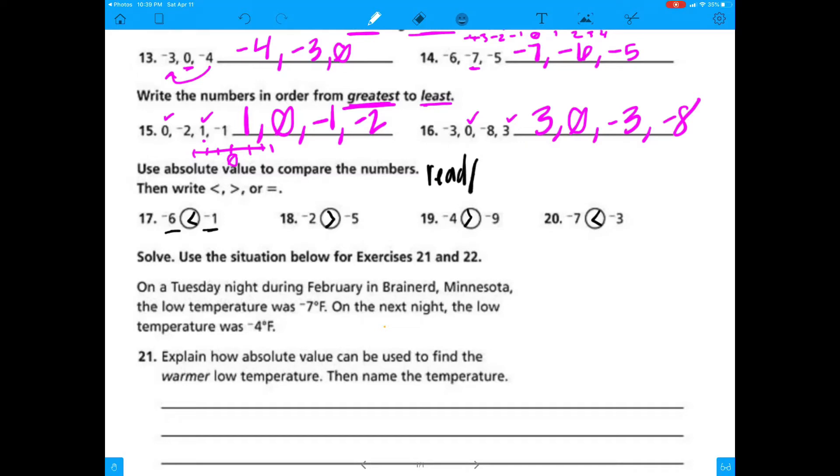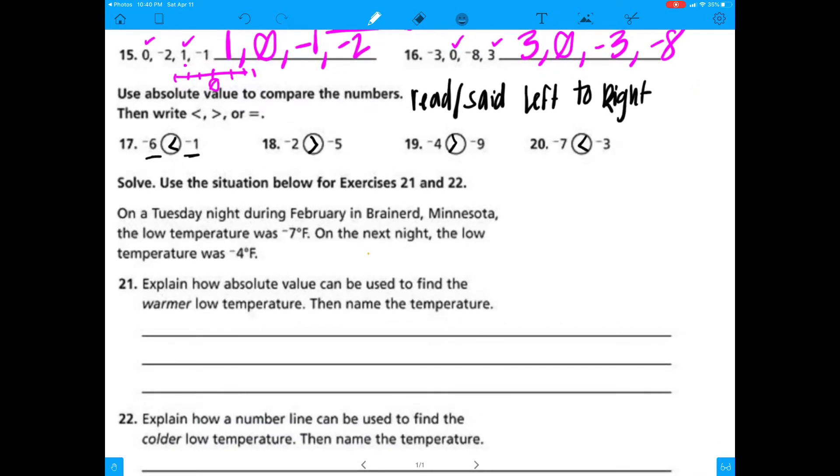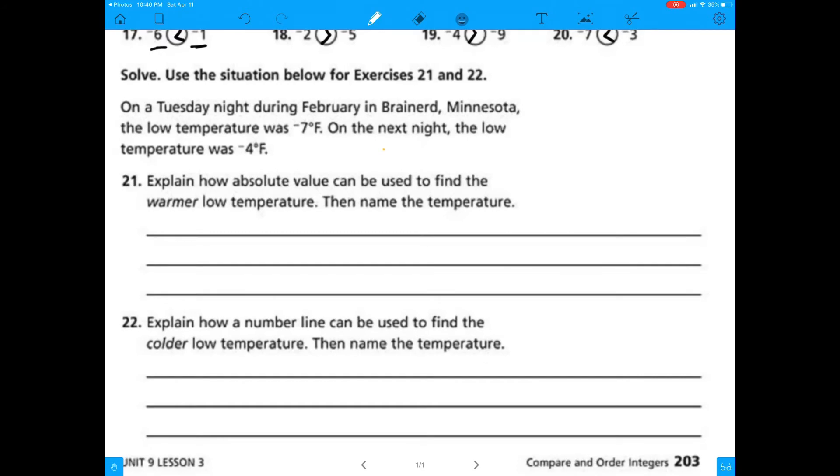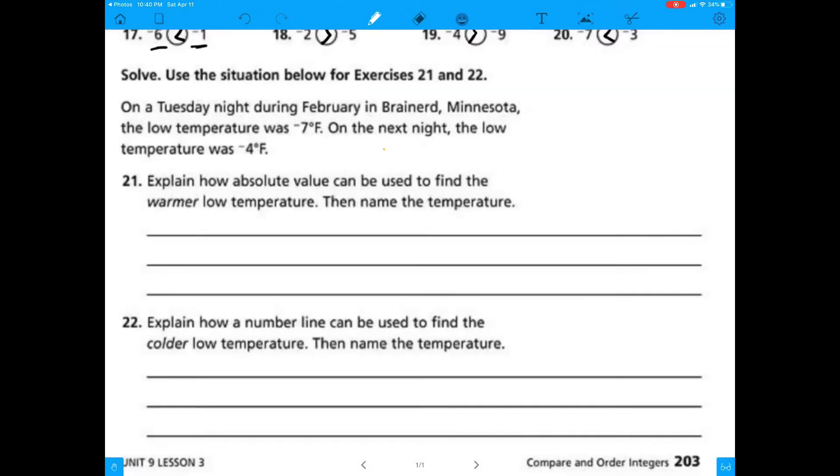But your answer cannot be a negative number. So number 16, negative 6 versus negative 1. When we use absolute values to compare this, negative 6 would actually be less than negative 1. And negative 18, negative 2 would be greater than negative 5.